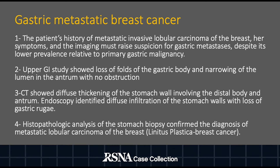The final diagnosis of this case was gastric metastatic breast cancer. The patient's history of metastatic invasive lobular carcinoma of the breast, her symptoms, and the imaging must raise suspicion for gastric metastases, despite its lower prevalence relative to primary gastric malignancy. Upper GI studies showed loss of folds of the gastric body and narrowing of the lumen in the antrum with no obstruction. CTs showed diffuse thickening of the stomach wall involving the distal body and antrum. Endoscopy identified diffuse infiltration of the stomach walls with loss of gastric rugae. Finally, histopathological analysis of the stomach biopsy confirmed the diagnosis of metastatic lobular carcinoma of the breast.